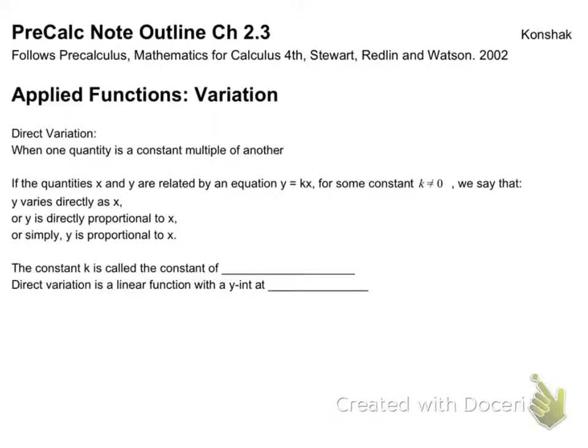Precalculus, this is 2.3. We're going to talk about applied functions, basically variation. There are three different versions of variation, and it's actually used quite often. It's all about creating a simple equation, the first one being the most simplistic of direct variation, making a connection between two variables.